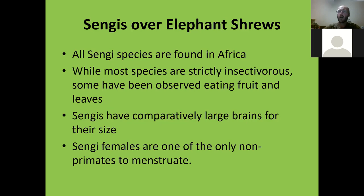Sengis are elephant shrews, and I prefer the name sengi because it doesn't confuse people with true shrews. Jonathan Kingdon in 1997 suggested we should start calling them sengis instead, because of the confusion, and also it's an African word — and since they're completely and only found in Africa, we should use it. All sengi species are found in Africa. While most are strictly insectivorous, some have been observed eating fruit and leaves, especially the larger ones. Sengis have large brains compared to their body size. Sengi females are one of the few non-primates to menstruate, along with fruit bats and primates.